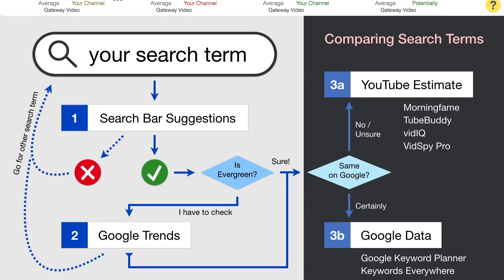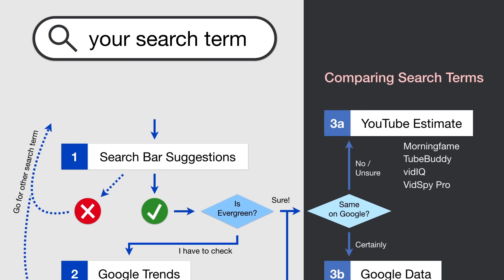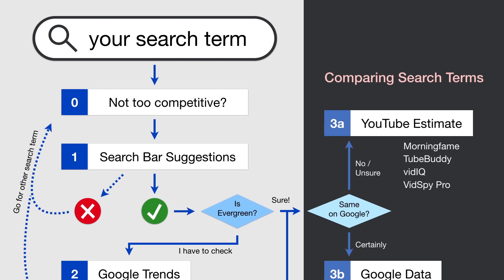I hope this helps. But keep in mind one important thing: make sure that you only consider search terms that have low enough competition. If you have a search term with high search volume but it is too competitive for your channel, then your video won't rank and you don't get any of that search traffic. So step zero is to find a search term that is not too competitive. If you want to learn more about how to find those low competition search terms, check out this playlist — it contains all the tips that are particularly useful for small channels because small channels cannot beat a lot of competition yet.